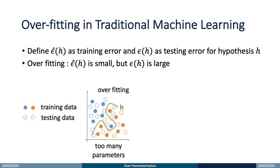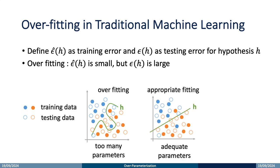Here we illustrate an example. The solid dots indicate the training instances, and the hollow dots indicate the testing instances. If there are too many parameters, the model h will perfectly fit all the training instances, and hence the boundary will be very complex. In this case, some of the testing instances near the boundary will be misclassified. To make the model fit the data appropriately, the number of parameters should be reduced so that the boundary will be smooth. Although some training instances will be misclassified, more testing instances will be classified correctly.